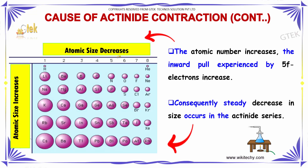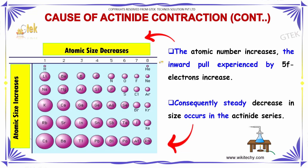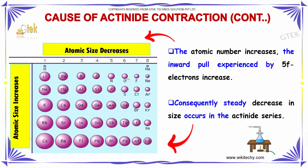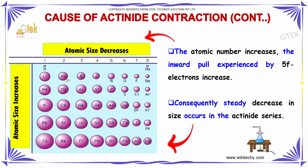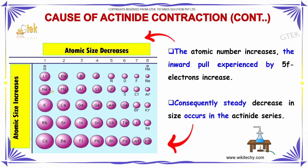The causes of actinide contraction further explain the atomic radii trend. As atomic radii decrease, the inward pull experienced by the 4f and 5f electrons increases. Consequently, a steady decrease in size occurs across the actinide series.